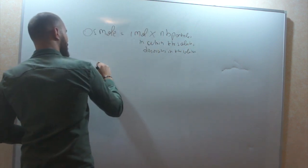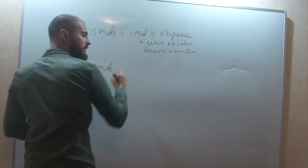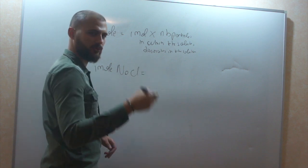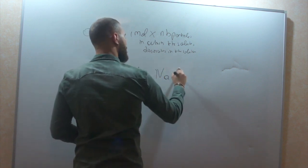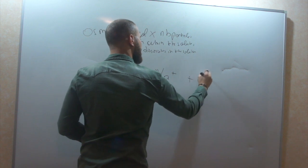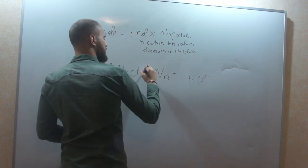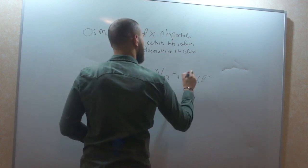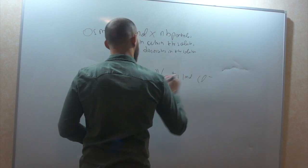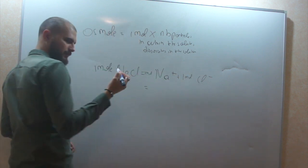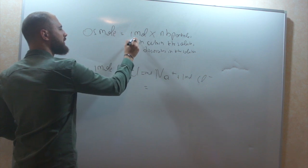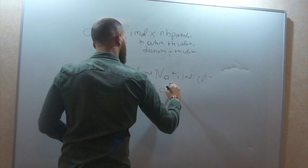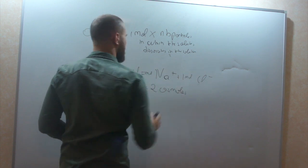So, if you have 1 mole of NaCl, it will dissociate into Na+ plus Cl-. 1 mole of Na+ plus 1 mole of chloride. Then, it will give us 2 osmol. As simple as that.